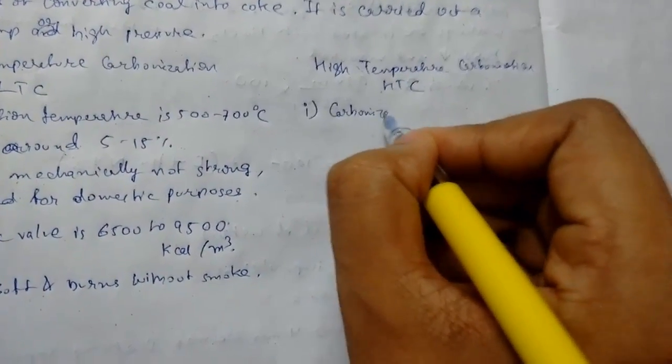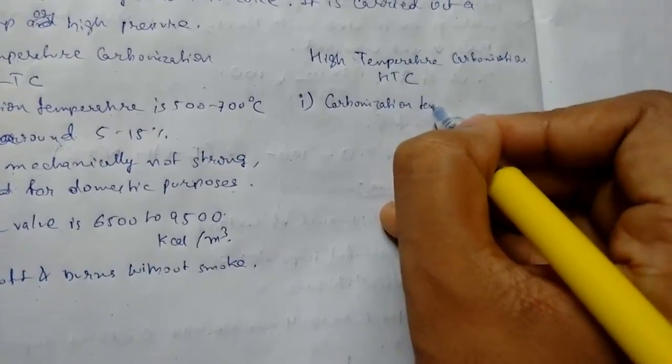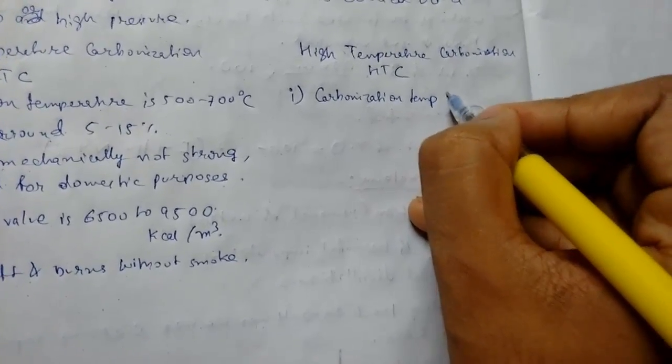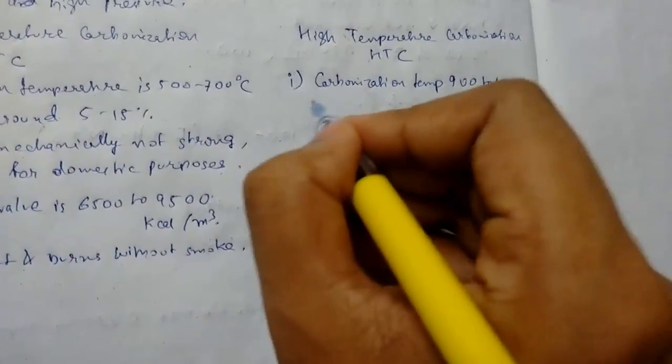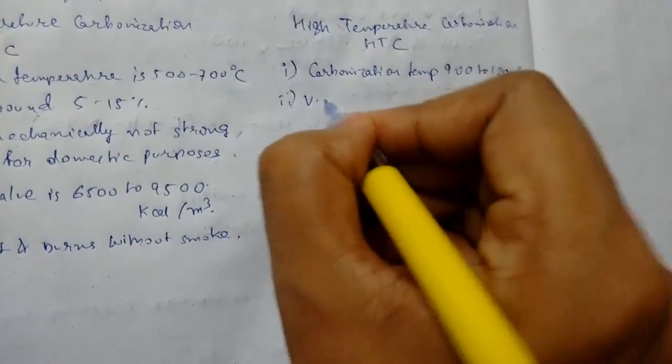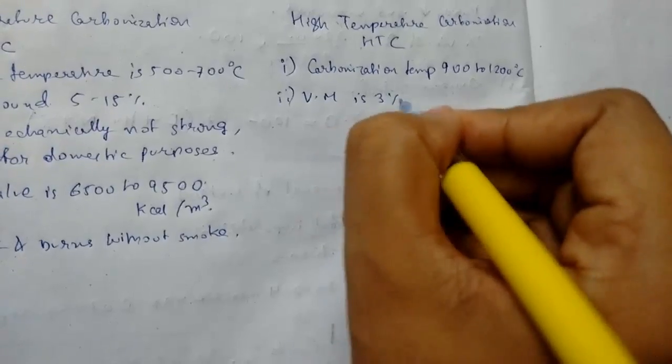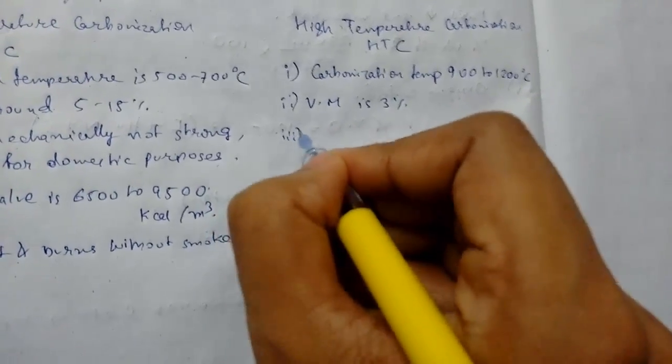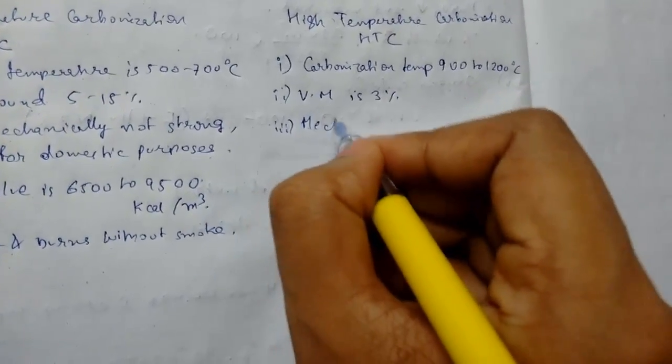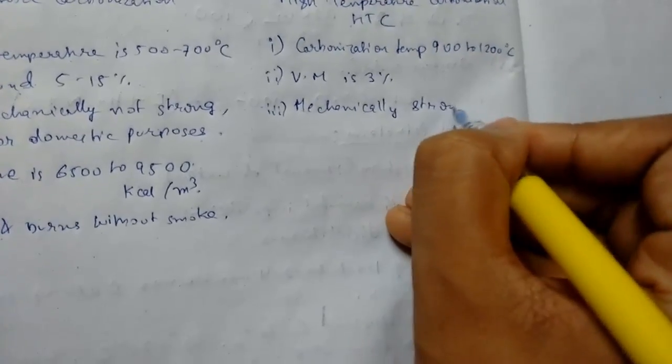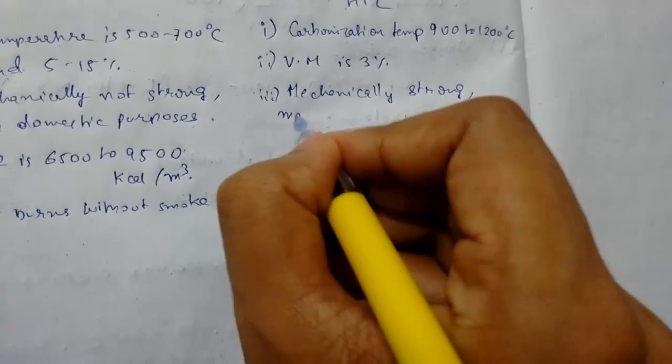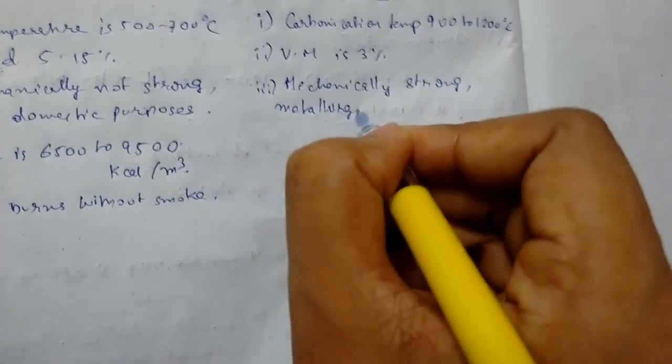Carbonization temperature is 900 to 1200 degrees Celsius. Volatile matter content is 3 percent. It is mechanically strong and is used for metallurgical processes.